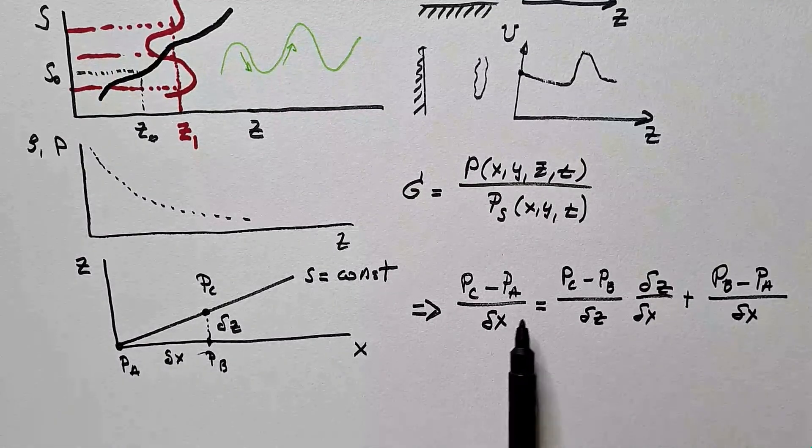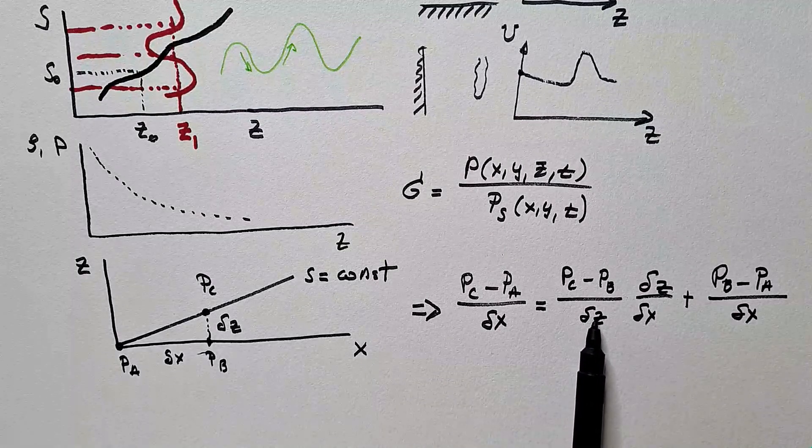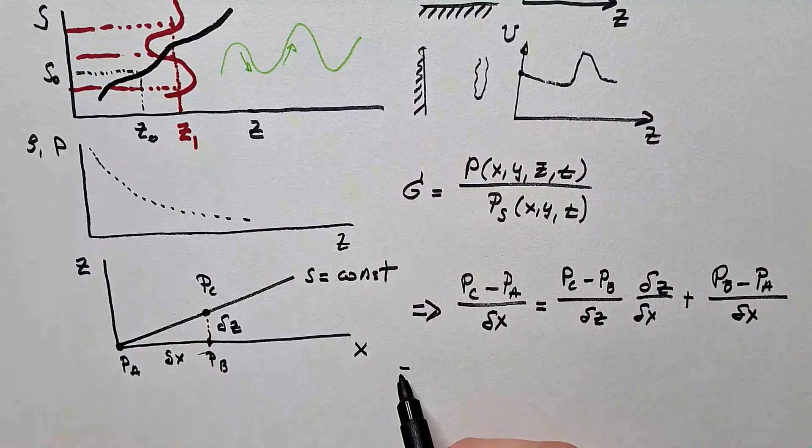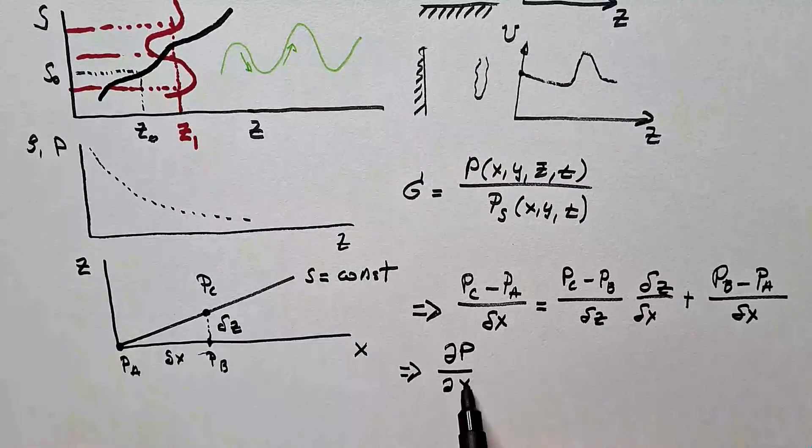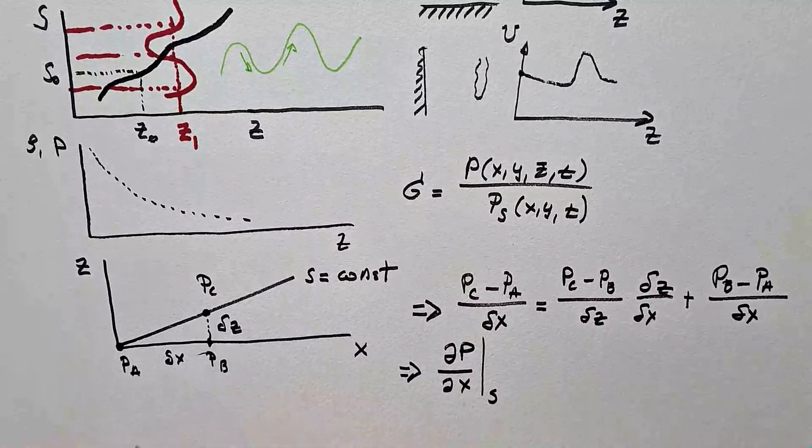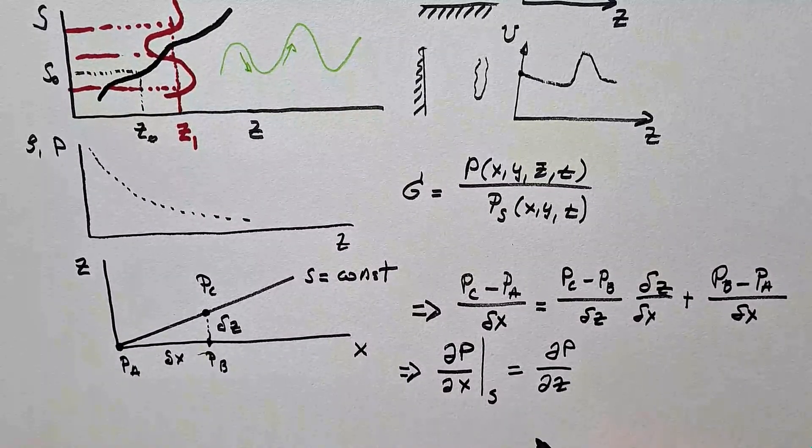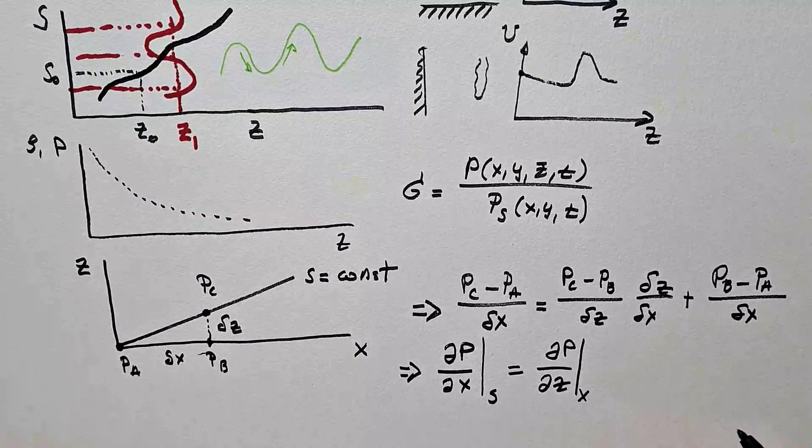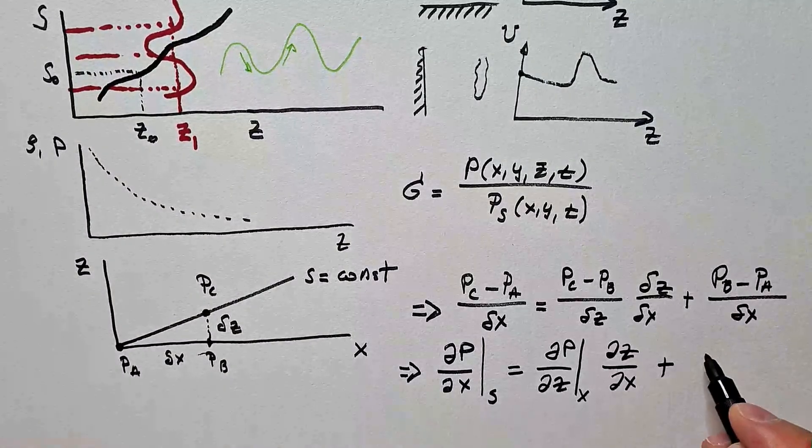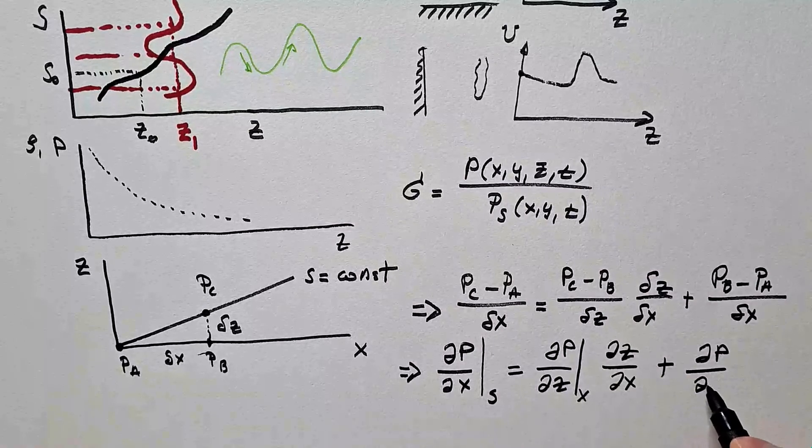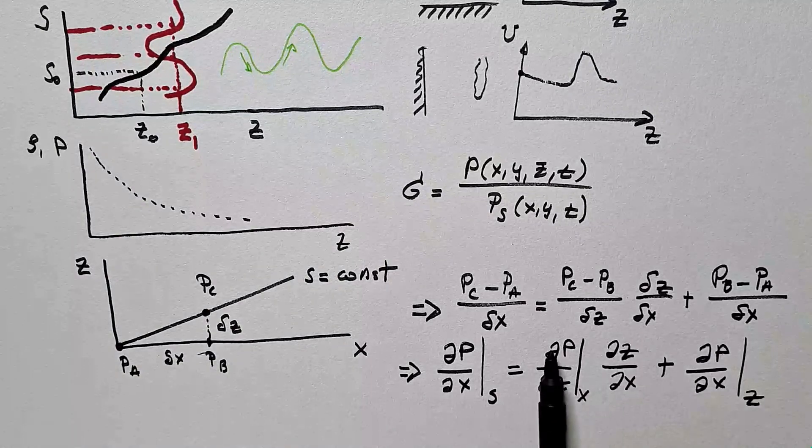In previous video you will recall I also explained this expression using the multiple variable calculus and the chain rule. Now, what we need to do, we simply take limits of this expression by forcing delta x as well as delta z to go to zero. And this equation will become delta P over delta x at constant s, so along this, is equal delta P over delta z at constant x, plus delta z over delta x, plus this over here just becomes delta P over delta x at constant z.